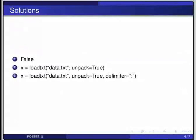We use the loadtxt command as follows: x = loadtxt('data.txt', unpack=True) for space-separated data, or x = loadtxt('data.txt', unpack=True, delimiter=';') for semicolon-separated data.